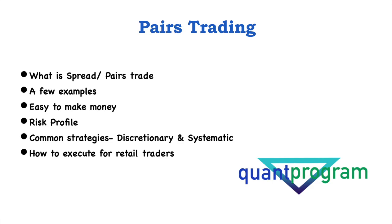I'm going to show some examples and then show you how easy it is to make money doing spread trading. We'll discuss the risk profile and how you can reduce your systematic risk — how some of the big crashes in the global market don't affect people who spread trade. I'll also discuss common strategies, whether discretionary or algo-based systematic trading, and how to execute this for retail traders using futures, micro futures, CFDs, stocks, or even cryptocurrencies.